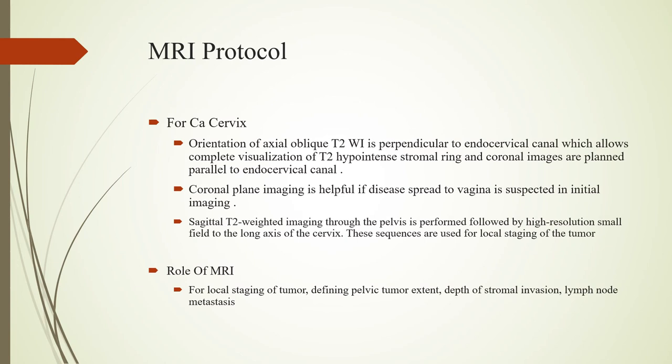For the MRI, the axial, sagittal, and coronal T2-weighted images are taken. The axial images are taken perpendicular to the endocervical canal. The coronal images are parallel to the endocervical canal and help to see if there is disease spread to the vagina. The major role of MRI is for local staging of the tumor, defining the pelvic tumor extent, the depth of stromal invasion, the lymph node status, and if there is any metastasis.